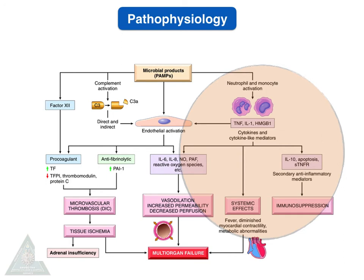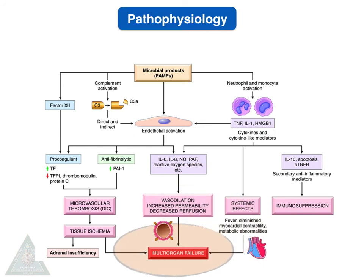Finally, the microbial products also result in activation of inflammatory cells like neutrophils and monocytes, which in turn release cytokines like tumor necrosis factor and interleukin-1. This leads to systemic effects of shock such as fever, diminished myocardial contractility, metabolic abnormalities, immunosuppression, and ultimately multi-organ failure.